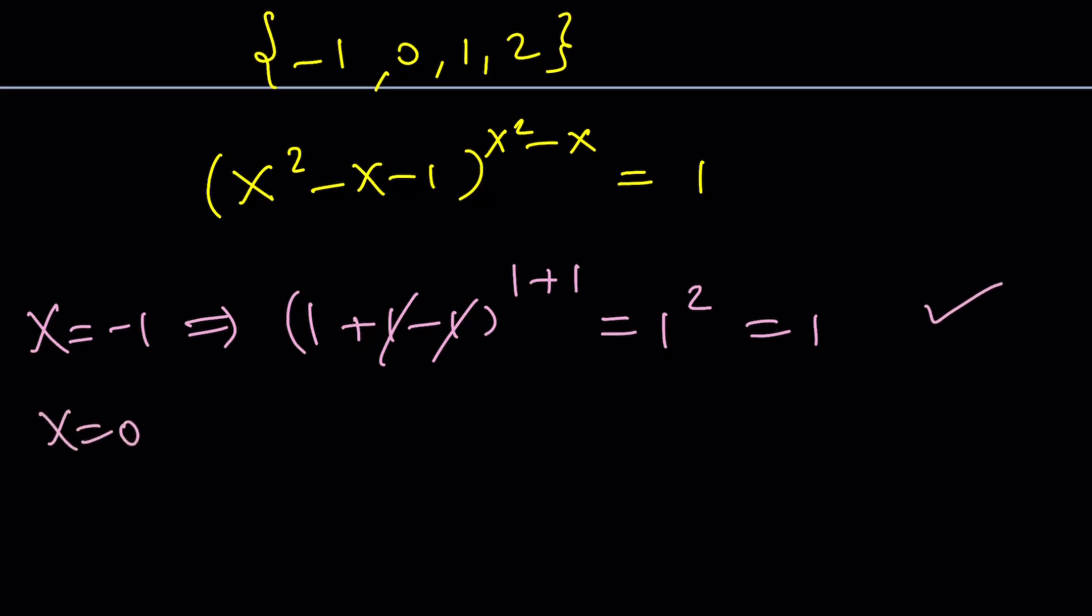x equals 0. Plug it in. You get negative 1 to the power 0 equals 1. Correct. Check. X equals 1. And if you replace x with 1, 1 minus 1 minus 1 to the power 1 minus 1. Kind of like a puzzle. This is 0, negative 1 to the power 0, again 1. The two solutions are true for the same reason, but they are different solutions. Make sense?